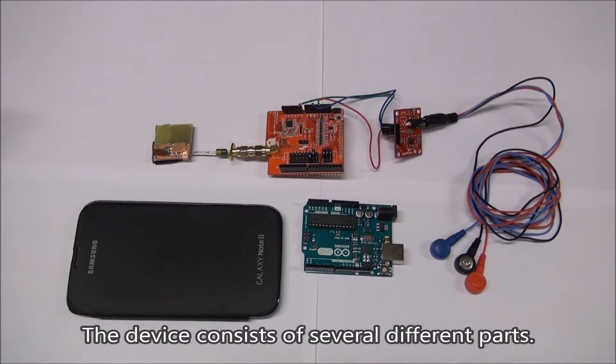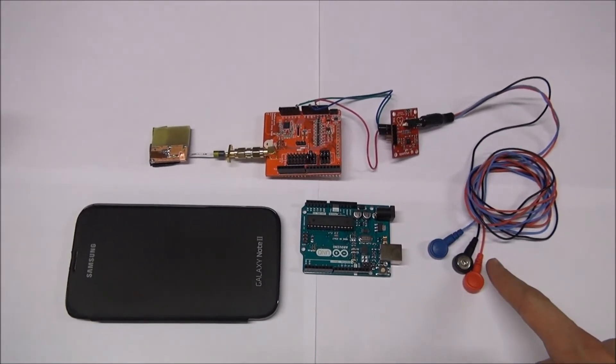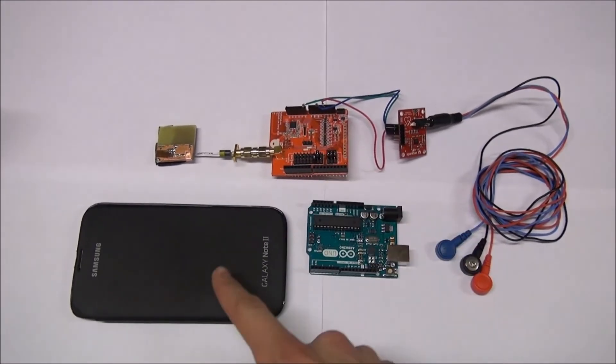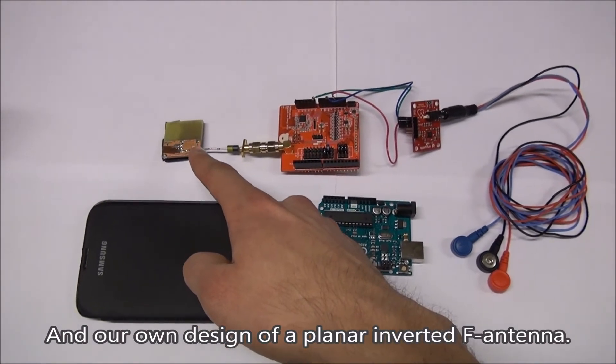The device consists of several different parts: an ECG sensor and electrodes, a microcontroller, a Bluetooth transceiver, an Android smartphone with an application, and our own design of a planar inverted F antenna.